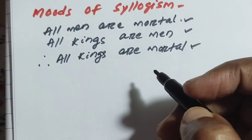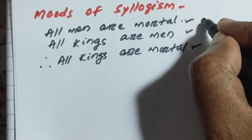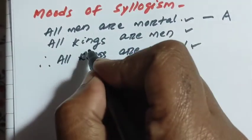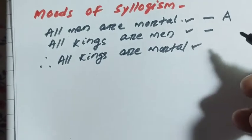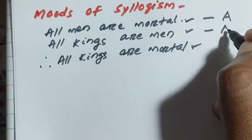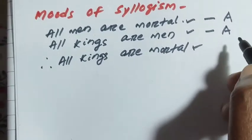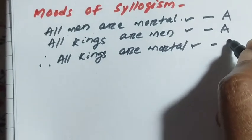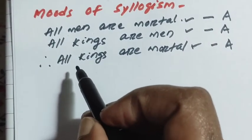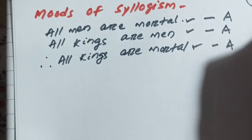According to quality and quantity, propositions are four types: A, E, I, O. Here 'All men are mortal' is an A proposition — universal affirmative. 'All kings are men' is also universal affirmative, an A proposition. The conclusion 'All kings are mortal' is also an A proposition. So the mode of this syllogism is A, A, A — A for major premise, A for minor premise, and A for conclusion.